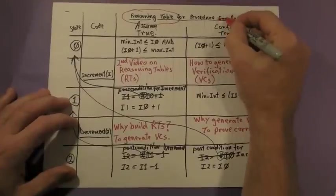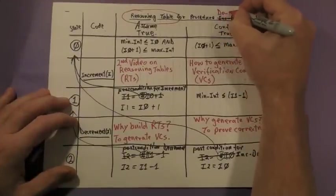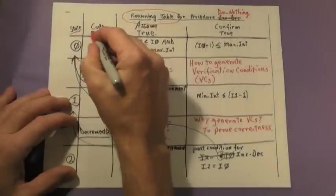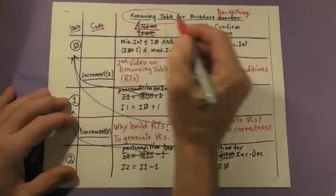We're going to update the reasoning table's name to do nothing, and then we're going to simplify the column names of the reasoning table to state, code, assume, and confirm.